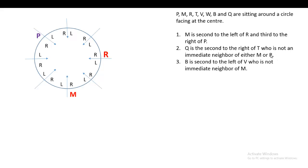Now the third condition: Q is second to the right of T, and T is not an immediate neighbor of either M or R. Since T cannot be placed next to M or R, T cannot occupy those adjacent positions. After eliminating those spots, only two places remain where Q and T can be placed.